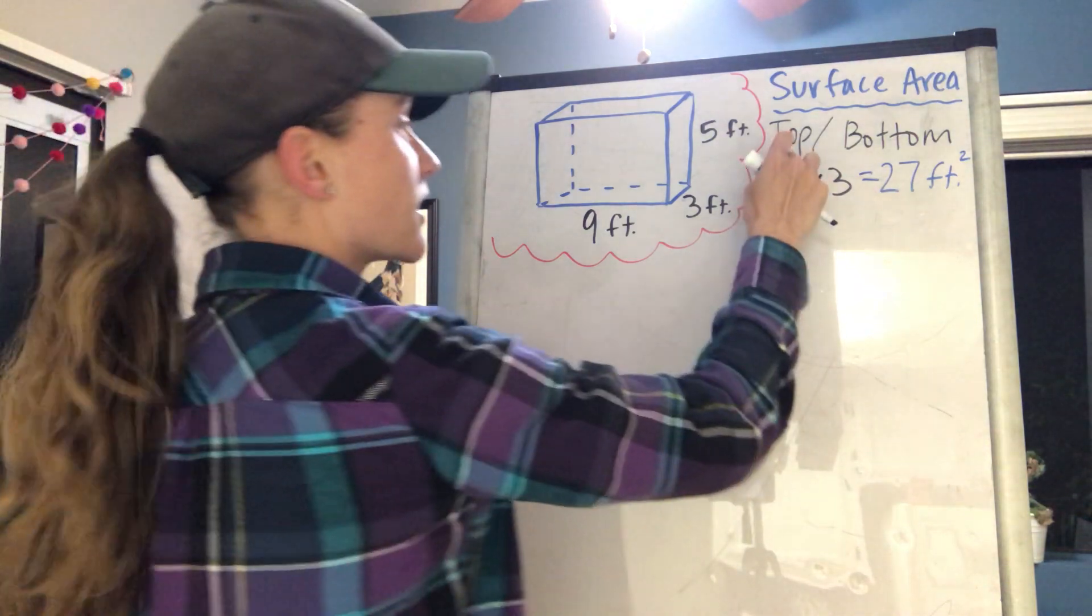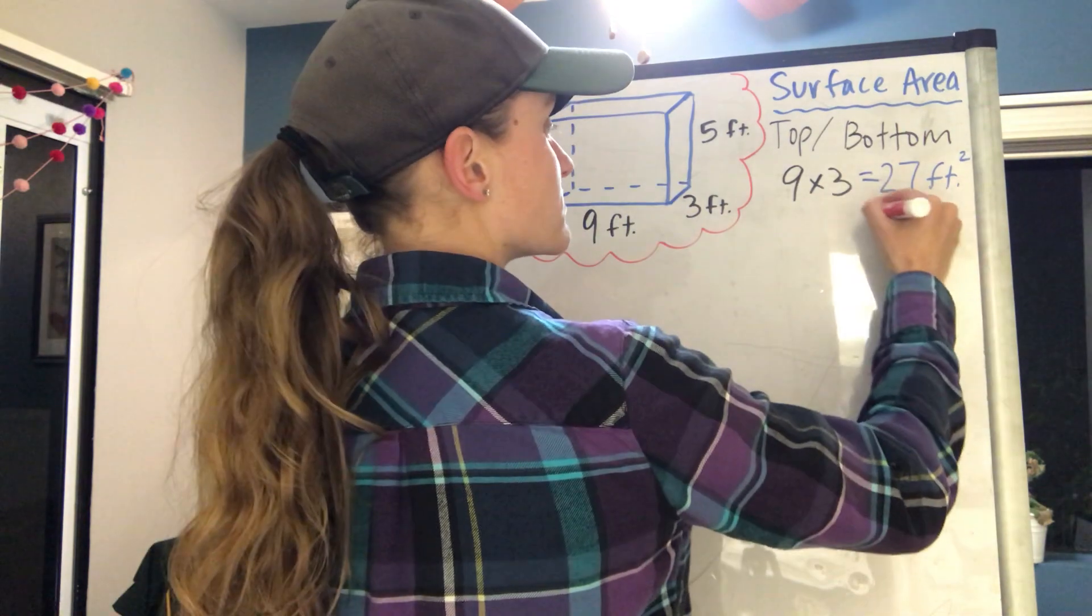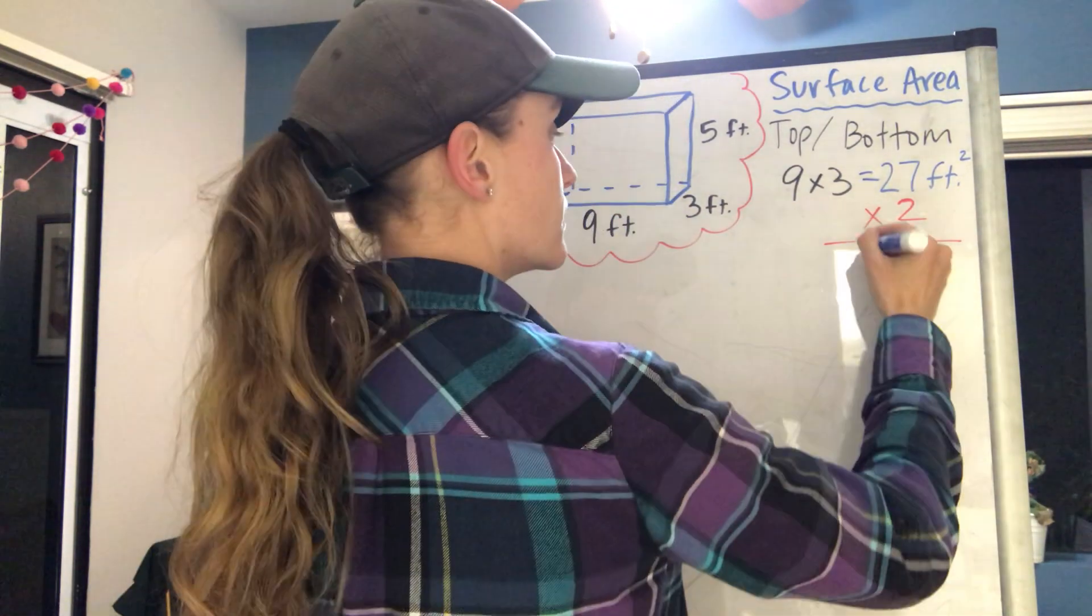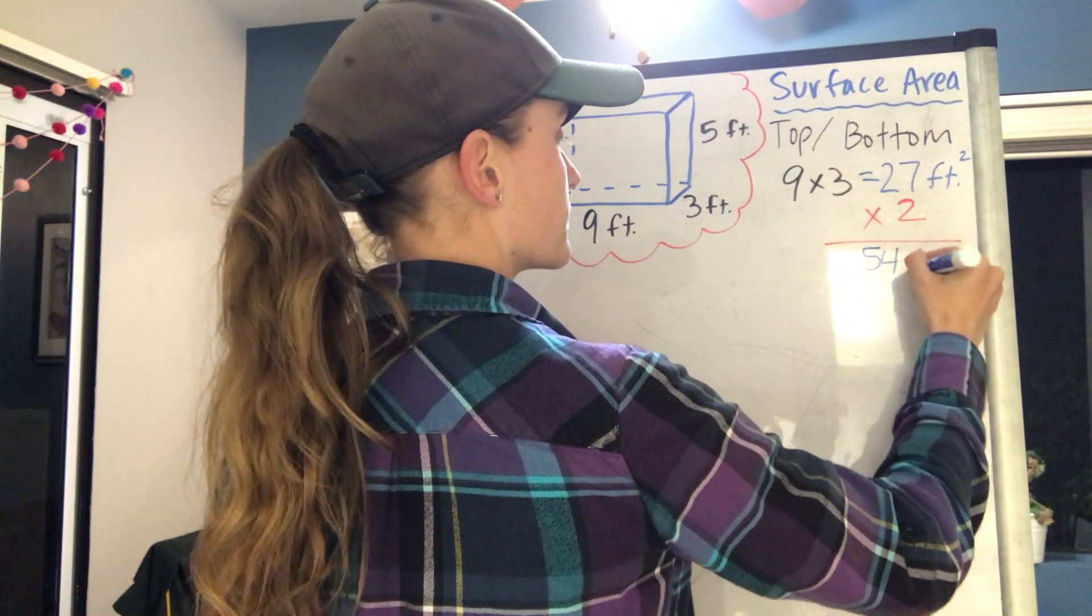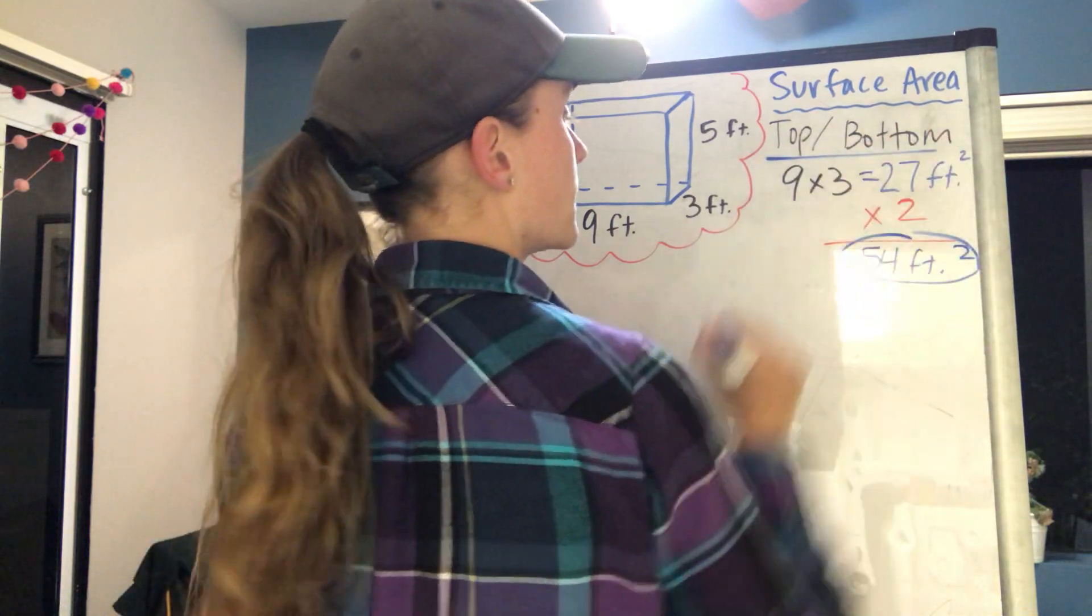But that's only for the bottom. I also need to find the area of the top, so I'm gonna multiply that by two because remember it's the top and the bottom. So that's gonna add up to 54 feet squared. Okay, so for the top and bottom I have 54 feet squared, so we got those two checked off.